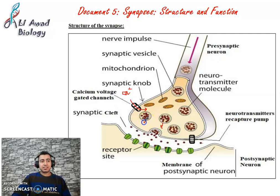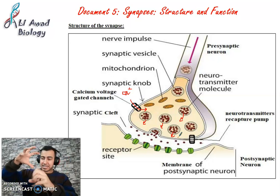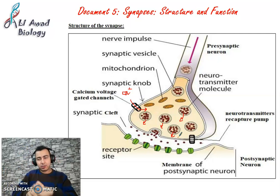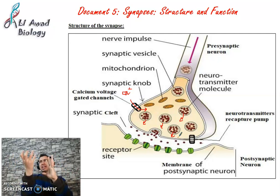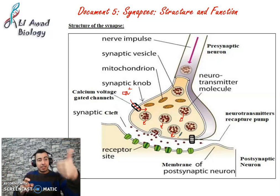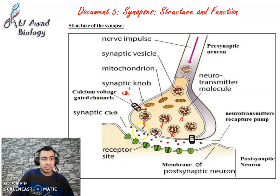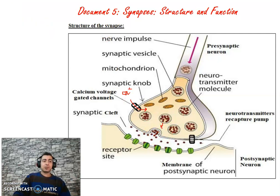The movement of calcium from outside to inside the neuron causes calcium to bind vesicles, driving vesicles toward the membrane. Once each vesicle is driven by calcium toward the membrane, the vesicle fuses with it. Each vesicle containing neurotransmitters, once it fuses with the membrane, opens and releases its neurotransmitter outside by a process called exocytosis.